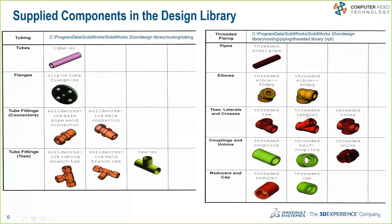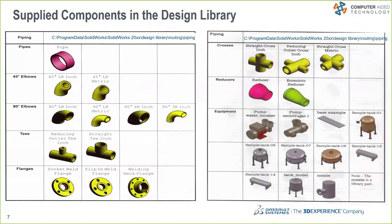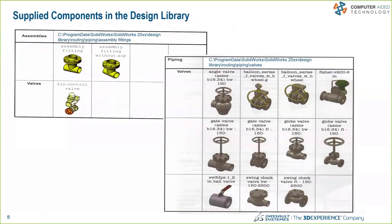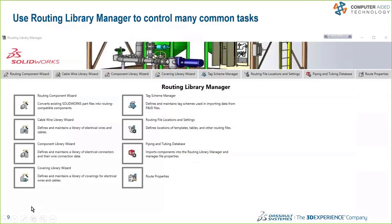Here's the design library. SolidWorks gives you many different library features such as tubes, flanges, straight connectors, fittings, couplings, reducers, and unions — a lot of components to work with. You can take those components, do a file save-as, and modify them per your application. For piping, you've got 45- and 90-degree elbows, flanges, pumps, tanks, valves, and check valves. SolidWorks gives you a great start with this library.